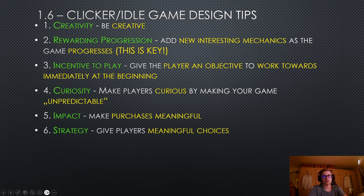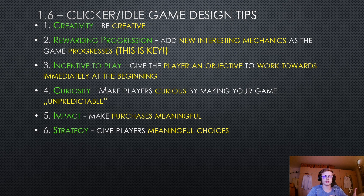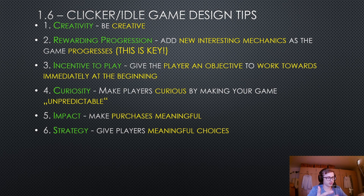Our sixth point is strategy — give players meaningful choices. Usually have at least three meaningful choices available to your player. For example, this can mean choosing between an idle playstyle or buying an upgrade versus a building. It could also be choosing whether to go for an achievement or save up for an upgrade, or choosing which upgrade to buy if they can afford multiple ones — basically something to let them min-max their production and play according to their own playstyle.